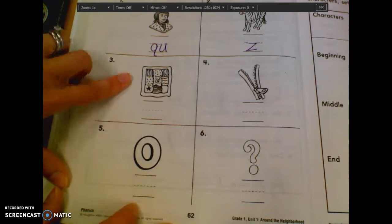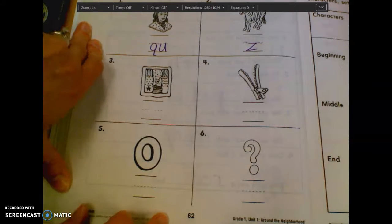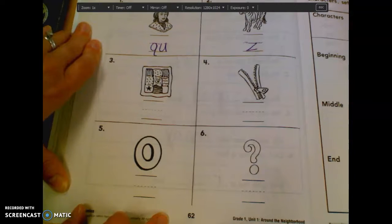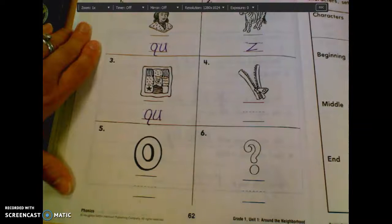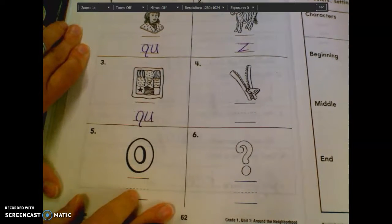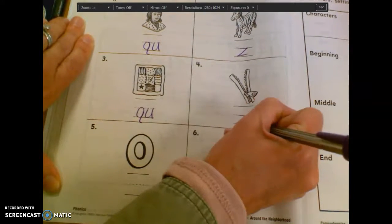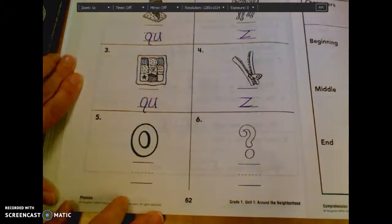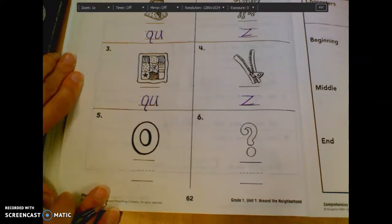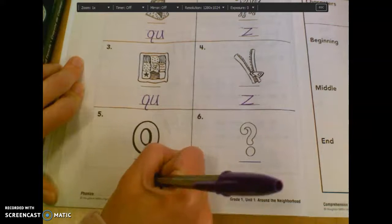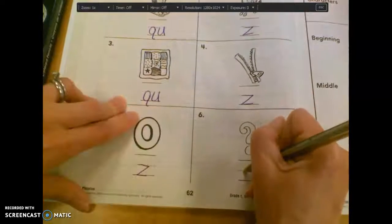What about number three? What is that a picture of? Logan? It's like a blanket, but remember it has to start with Q, U, or Z. Owen? Quilt is Q, U. Quilts. What about number four, Amelia? Zipper is Z. Zipper. Number five. What is that, Mason? Zero is Z. Very good. And what about number six? It's Christian K. Question mark, which is Q, U. Good.